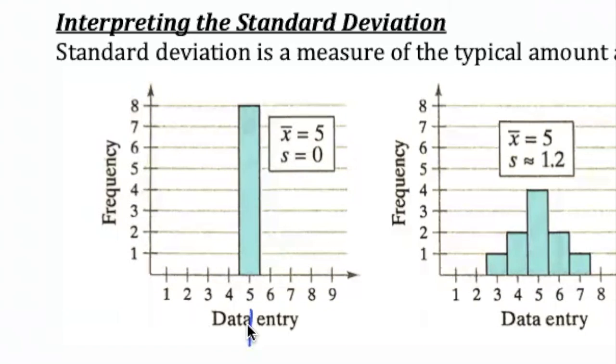In this very first graph, 5 is the mean, and notice every single piece of data is located here at 5. So there's no distance between the mean and each piece of data resulting in a standard deviation of 0.